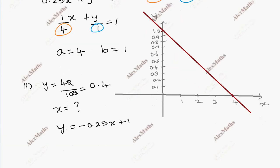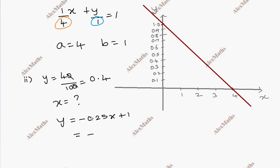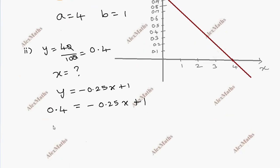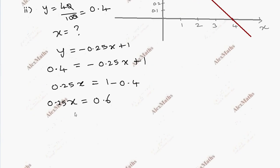Substituting y equal to 0.4 into the equation: 0.4 is equal to minus 0.25x plus 1. So 0.25x is equal to 1 minus 0.4, which is 0.6. Therefore x is equal to 0.6 divided by 0.25.